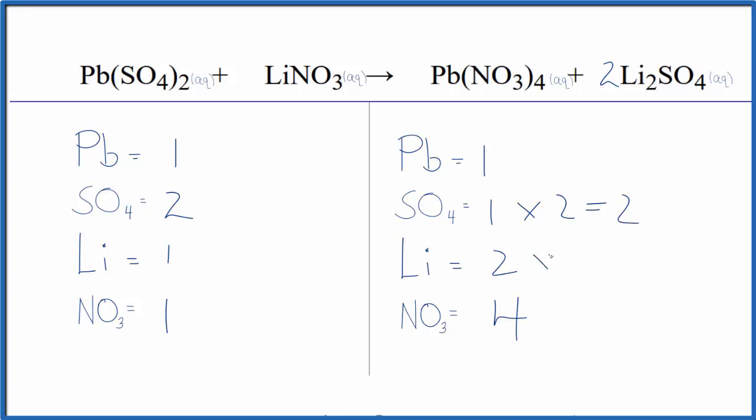but two times two, I'll have four lithiums. Let's just put a four in front of the lithium nitrate. One times four, that balances the lithium there. And then we have the one nitrate times four, that balances the nitrates.